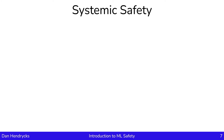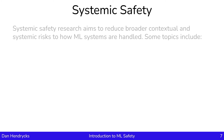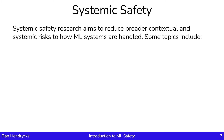Let's look at systemic safety. This line of research aims to reduce broader contextual and systemic risks that involve how machine learning systems are handled. The scope compared to the previous topics is generally broader — we're not just considering one single system. We might be considering multiple systems, including how the machine learning system interacts with human systems or cyber systems. It's a much broader scope than the previous topics.